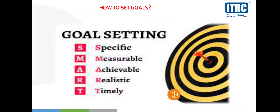In order to set goals and achieve goals, there is a concept called a Smart Goal. The first letter S stands for Specific — your goal should be specific. M stands for Measurable — your goal should be measurable, meaning you can track your progress from one point to another.